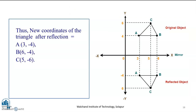The new coordinates of the triangle after reflection are shown in the diagram. The original coordinates are A, B, C and the reflected image has all the y-coordinates on the negative side, because this is a mirror image obtained by applying reflection along the x-axis. I hope you now understand how to apply the equation to obtain a reflection along a given axis.